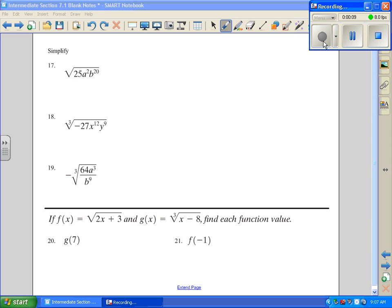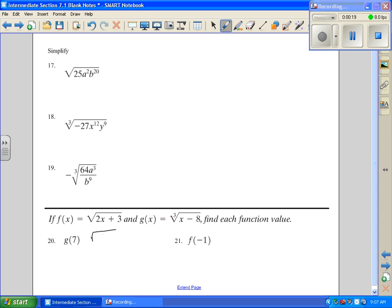When we have a function value, we want to evaluate this. This g says go to the g function, which is right here, and we're going to write it down. So I'm going to have the cube root of x minus 8, and then it says everywhere x is at, we want to put a 7 in place of that. So I'm going to put a 7 right there and leave everything else the same.